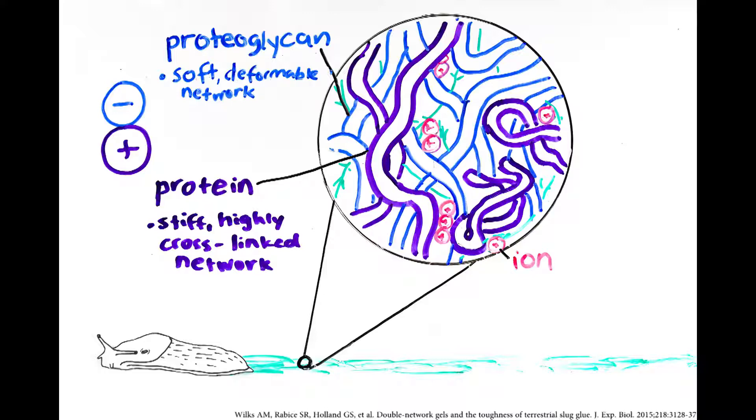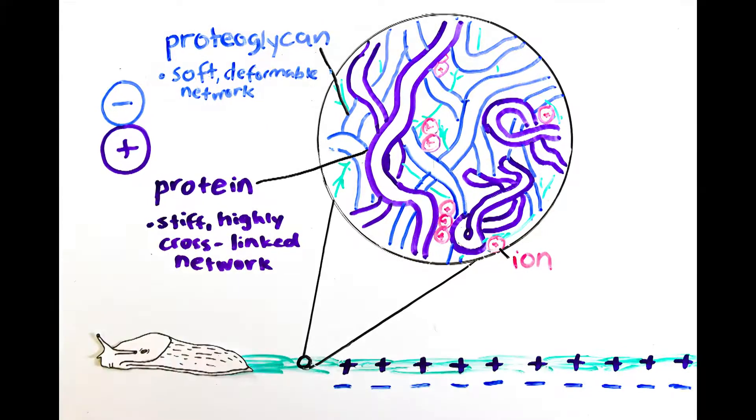To stick slugs to different surfaces, the net positive charge of the slime binds with the slightly negatively charged surfaces in the environment. The slime also sticks by intertwining its protein strands with the materials around it.